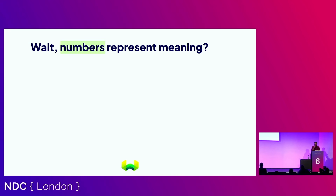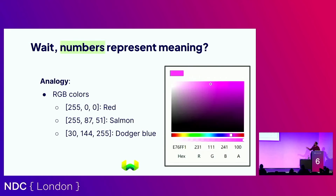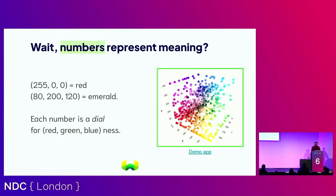This concept of numbers representing meaning shouldn't be foreign. We use it every day — the simplest form is RGB colors. We have three color channels and a number for each representing the intensity of R, G, or B, which captures the color. Similarly, just as you can cluster colors together into regions of red, greens, yellows — you can capture the semantics of any type of document really.